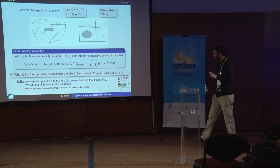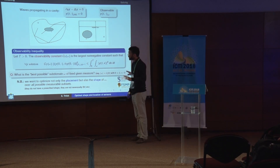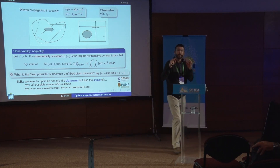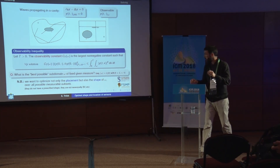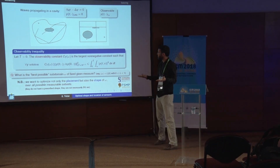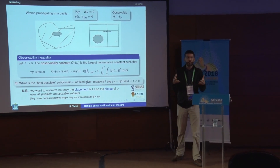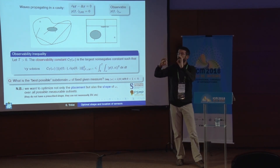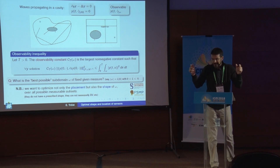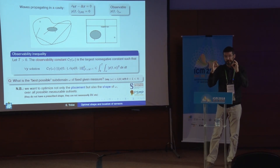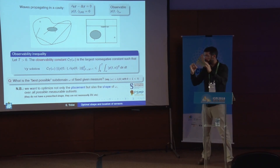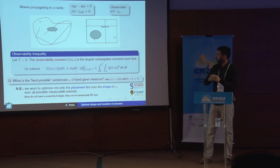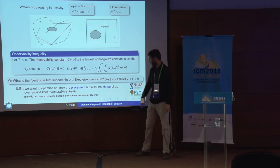In this work we want to optimize not only the placement of small omega but also its shape. This is very different from having sensors of prescribed shape — for instance two disks — which you would then place optimally. That would be a finite-dimensional optimization problem. But here we want to also act on the shape of small omega: not only place sensors optimally but shape them optimally.